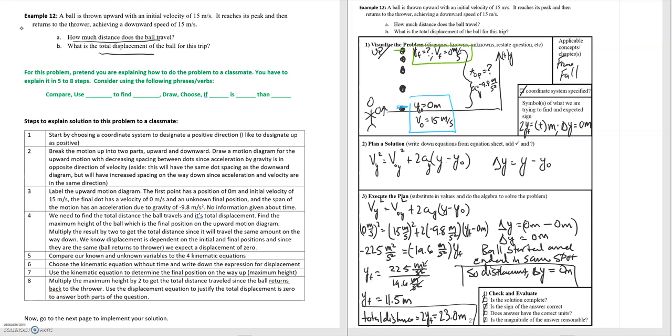So since we've already gone over that I've got the steps listed here and what we're going to do is we're going to take those steps and we're going to label them on a pre-worked solution for this problem. So starting with the first step, start by choosing a coordinate system to designate a positive direction. I like to designate up as the positive direction. So this is step 1 right here where I've designated the upward direction to be the positive y direction.